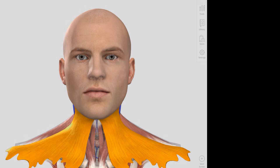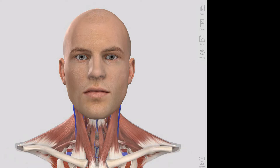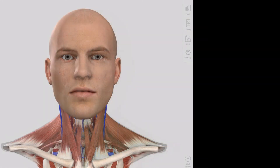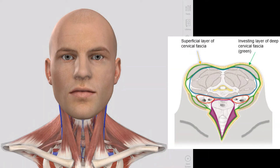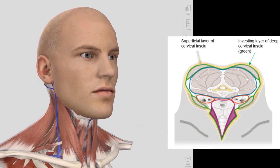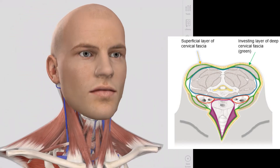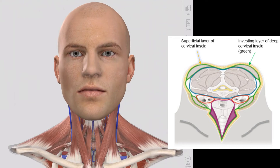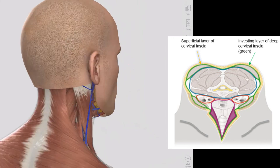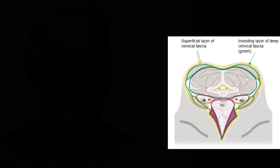Some of you may have dissected out the platysma as a separate layer, while some of you may have the platysma still within the superficial cervical fascia as you reflected it back with the skin. We then come to the first of the deep cervical fascial layers, the investing layer, which completely encircles the neck like a collar, splitting to surround the sternocleidomastoid muscles anteriorly and the trapezius muscles posteriorly.